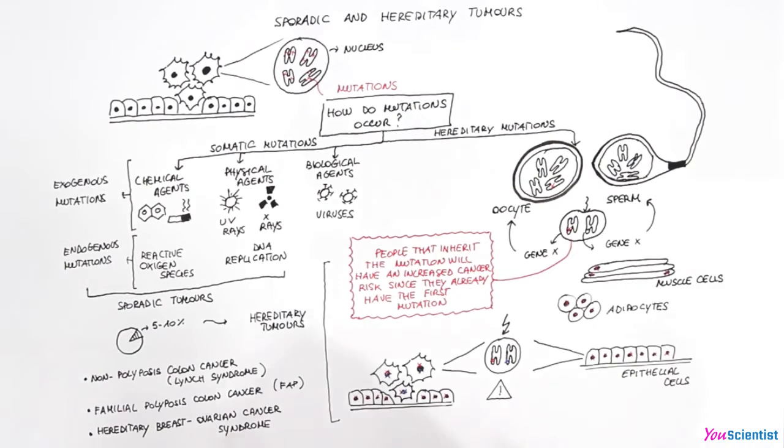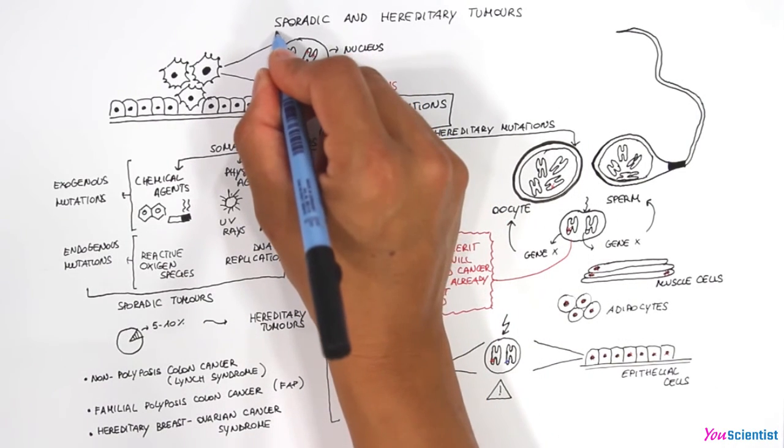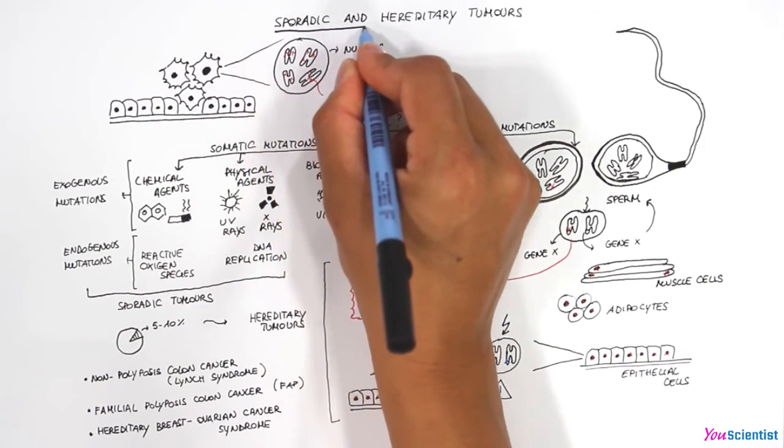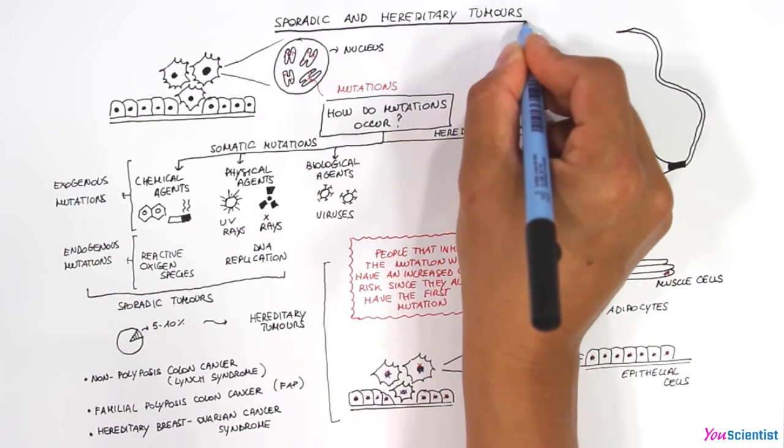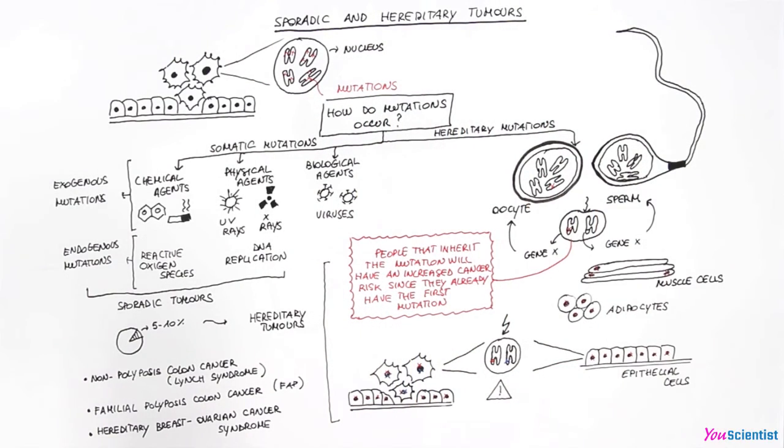Tumors are caused by the accumulation of mutations in the DNA. Tumors can be sporadic when DNA mutations arise by chance, or they can be hereditary if the patient already carries a genetic predisposition.